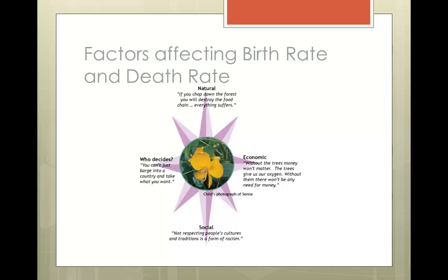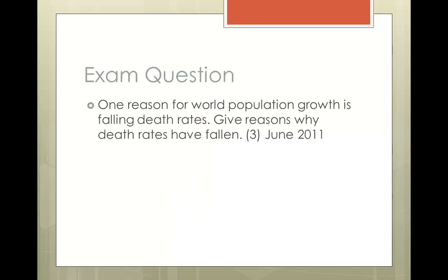There are also other countries which provide incentives to increase the number of children, and we'll look at Singapore later on in this talk. So these are the different ideas which can affect birth rates and death rates. Following this is an example of an exam question from the June 2011 paper. They said: one reason for world population growth is falling death rates — give reasons why death rates have fallen. This kind of question should take you between two to three minutes. If it says 'give reasons,' you need three ideas. Pause the video and write an answer to this question.